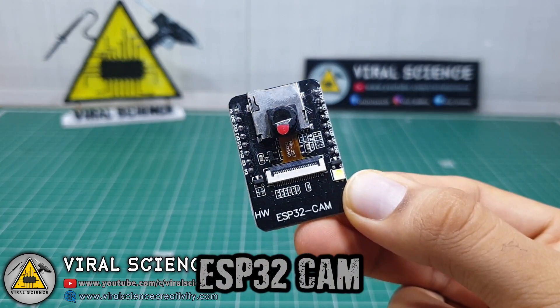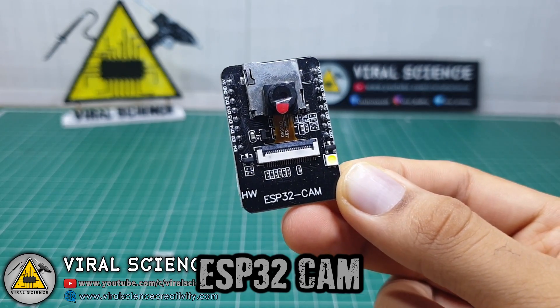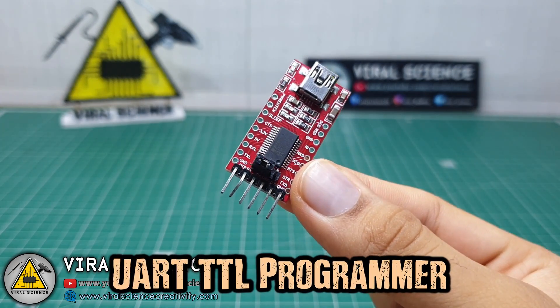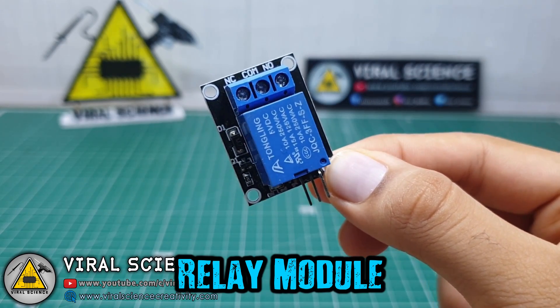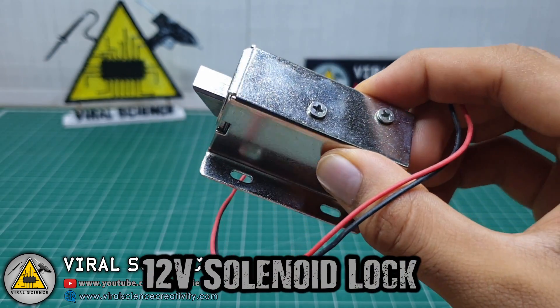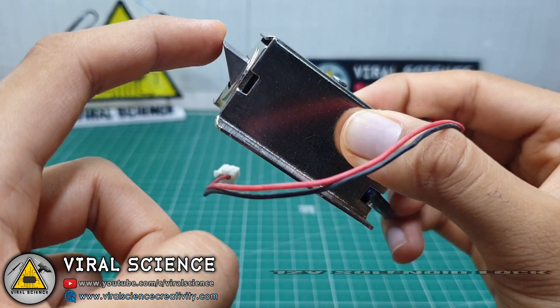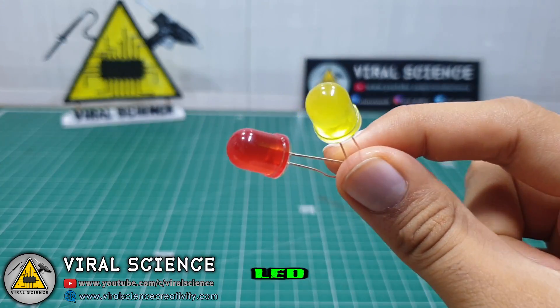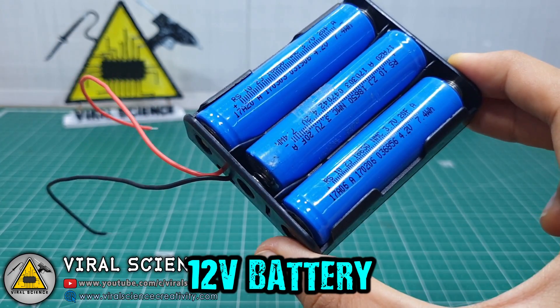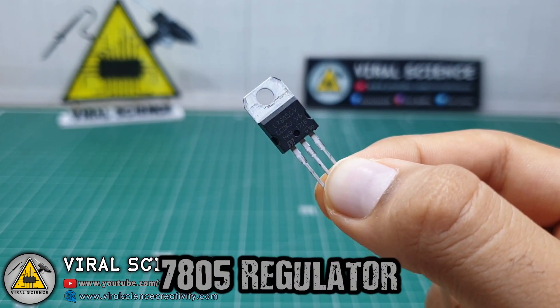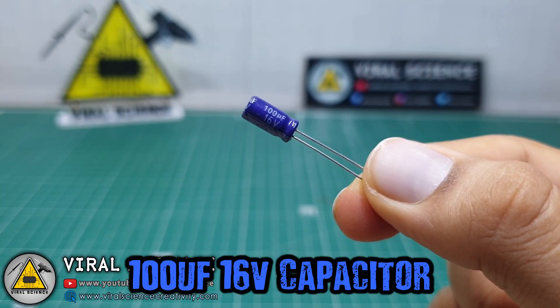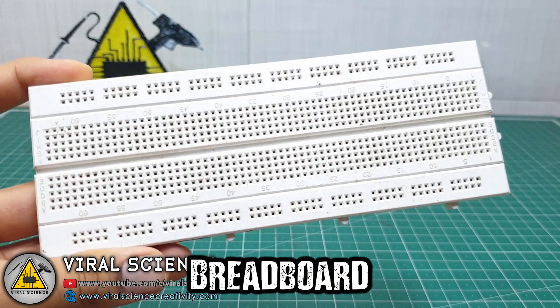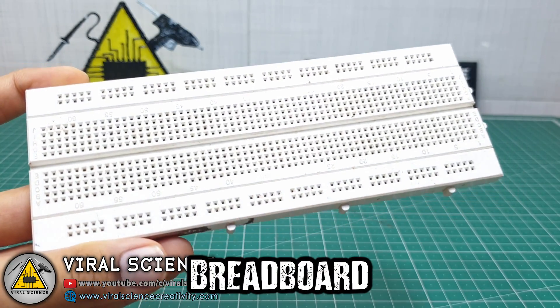So for this project you will need an ESP32 cam board, a UART TTL programmer, relay module, solenoid lock, LEDs, 12V power supply or you can use a battery, 7805 regulator which will give us 5V, and a 100UF 16V capacitor, a breadboard, and some wires.